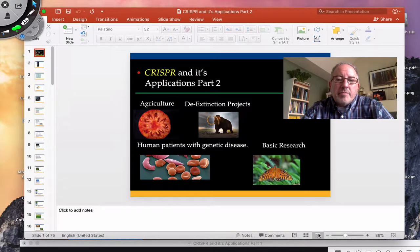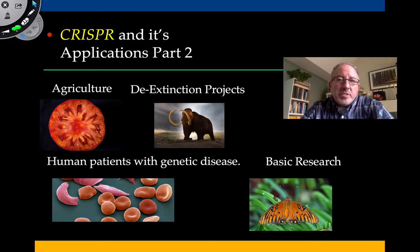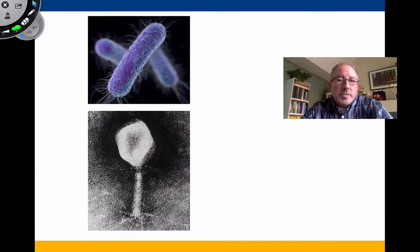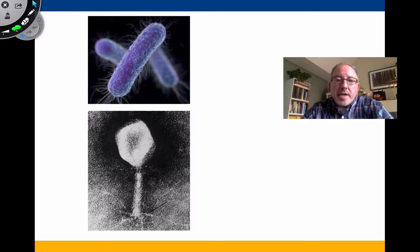In previous videos I've made, I've talked a little bit about the history of CRISPR-Cas9 gene editing and how it works. But this time I'm not going to mention it too much other than to say that it's an adaptive immune system that bacteria have evolved to defend themselves against bacteriophages.